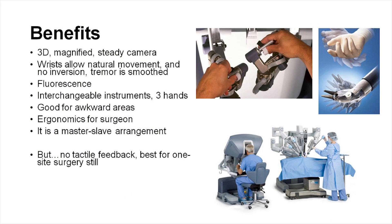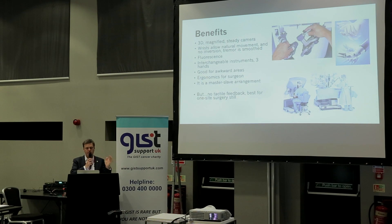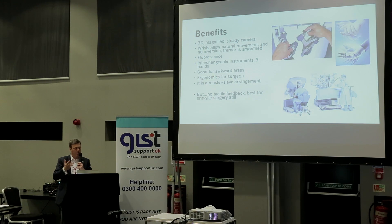The benefits of robotic surgery are that inside everything is 3D and magnified — a whole different level of clarity. You can move your wrists in real time and it's replicated by the arms inside. In laparoscopy you have to invert everything, but with the robot these are very natural movements. You can have fluorescence, which may be beneficial in the future. As a surgeon you can interchange instruments, the ergonomics are great, you sit at a console in complete control — the robot doesn't do anything itself, it just corresponds to your movements. It's particularly good for awkward areas inside.